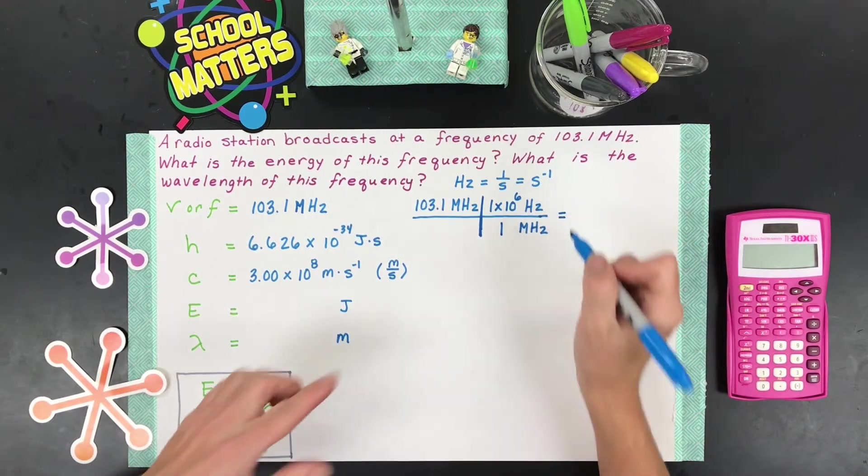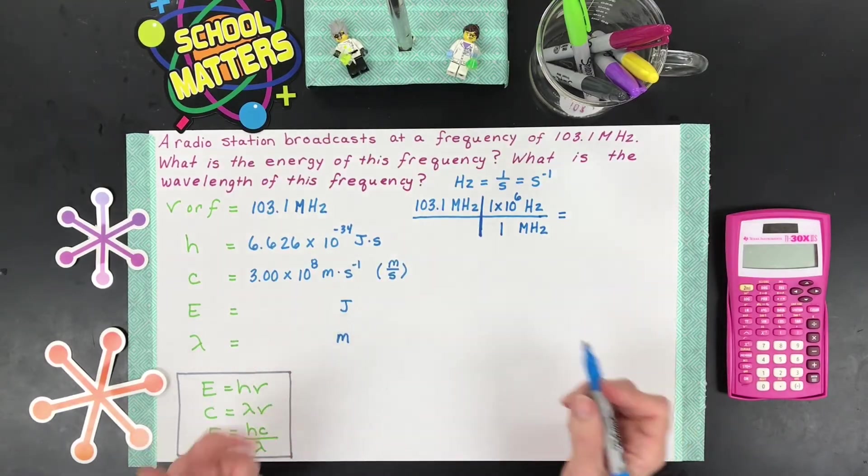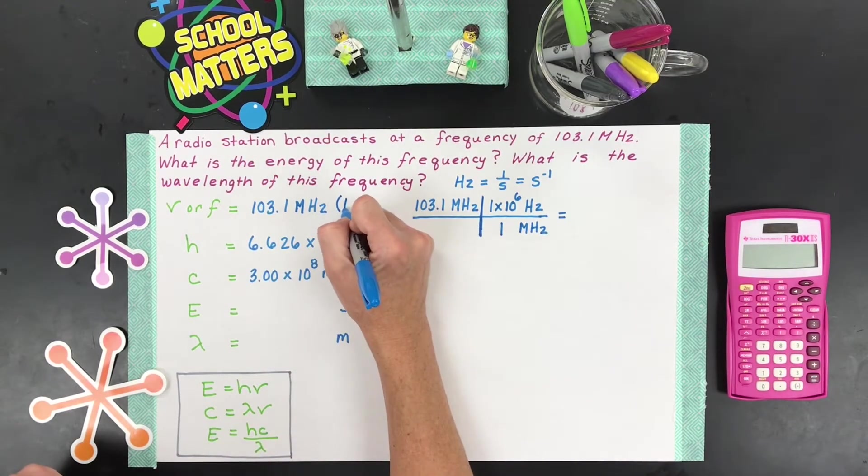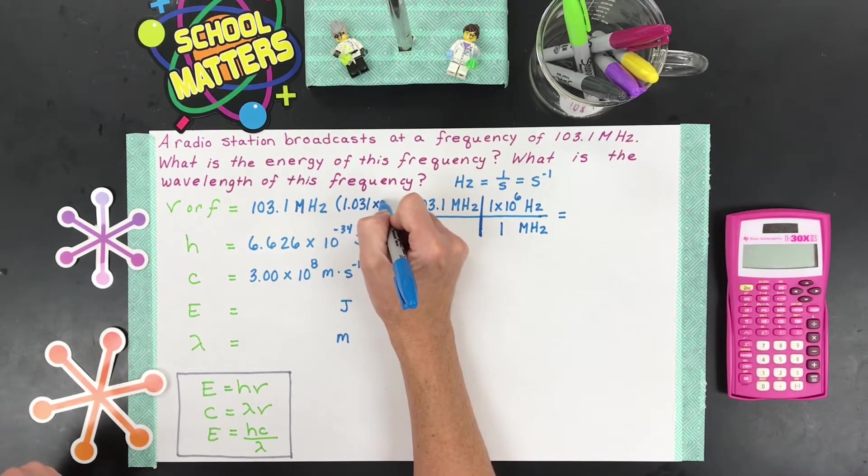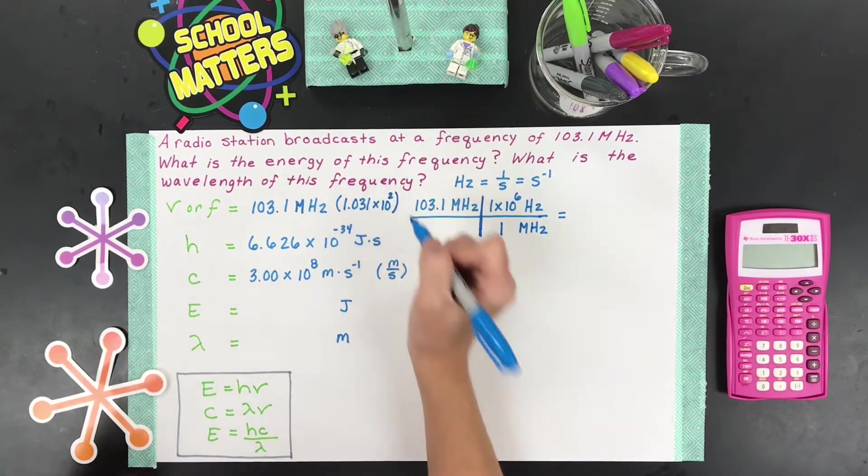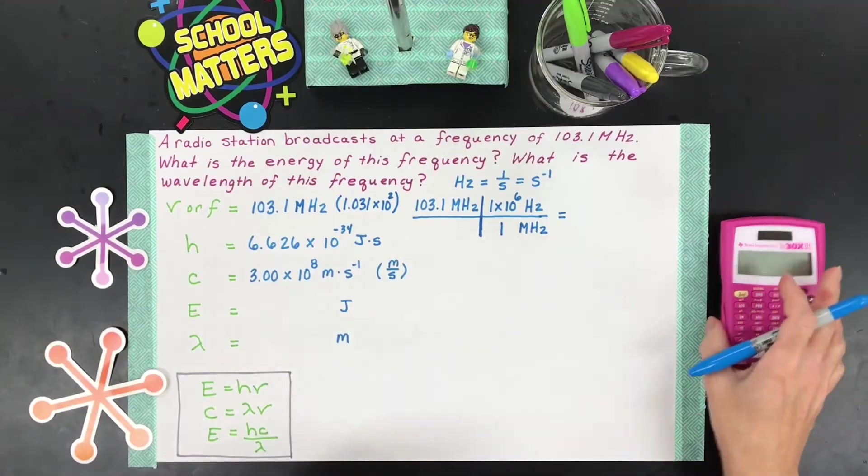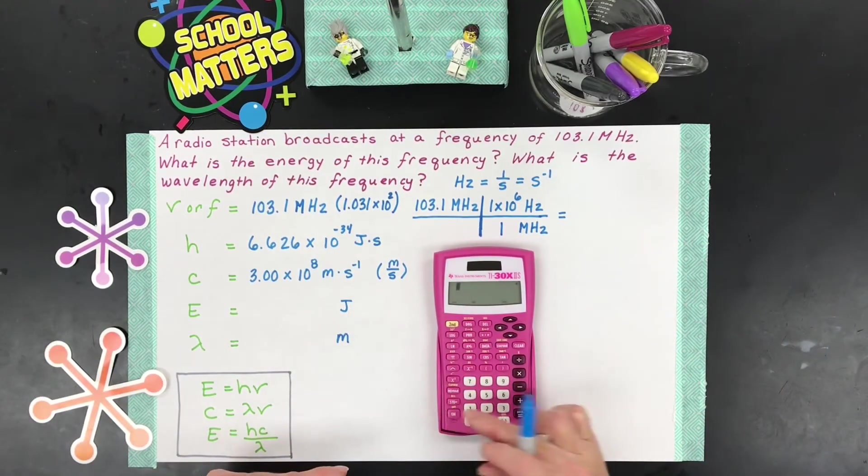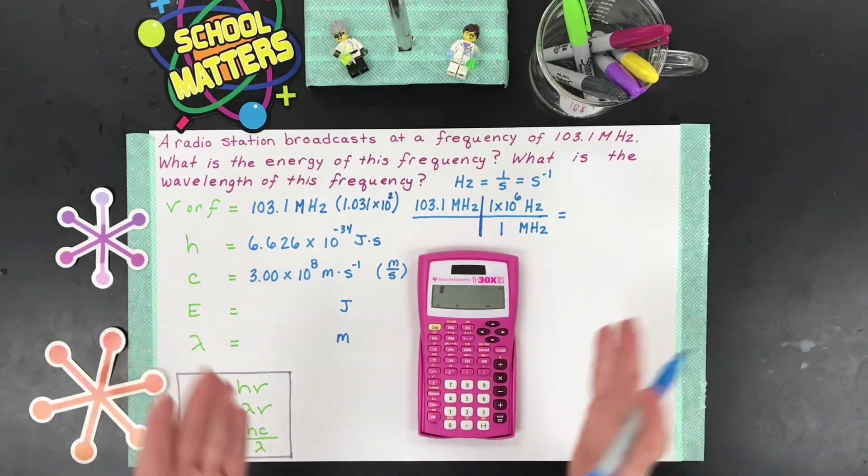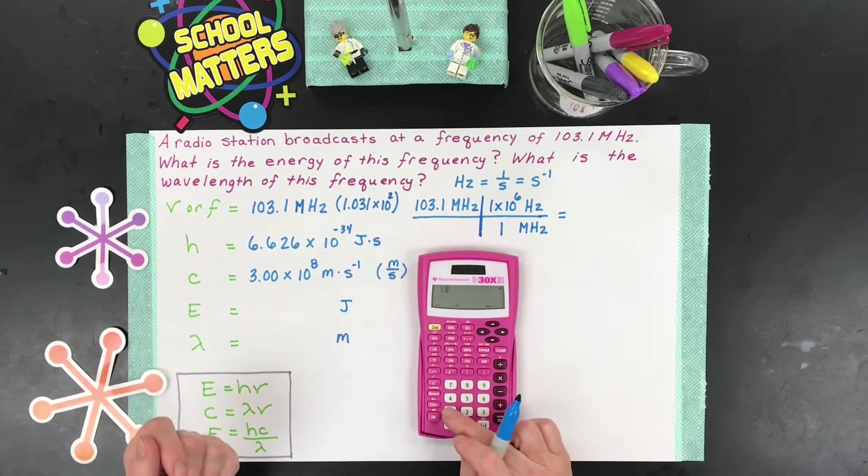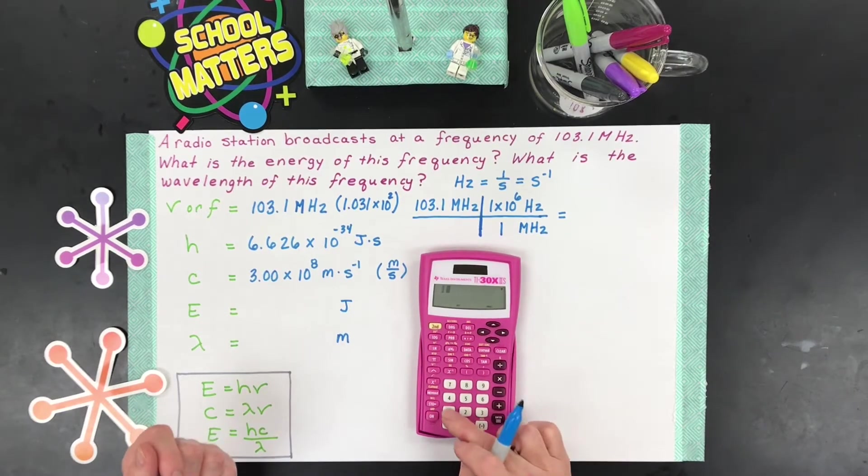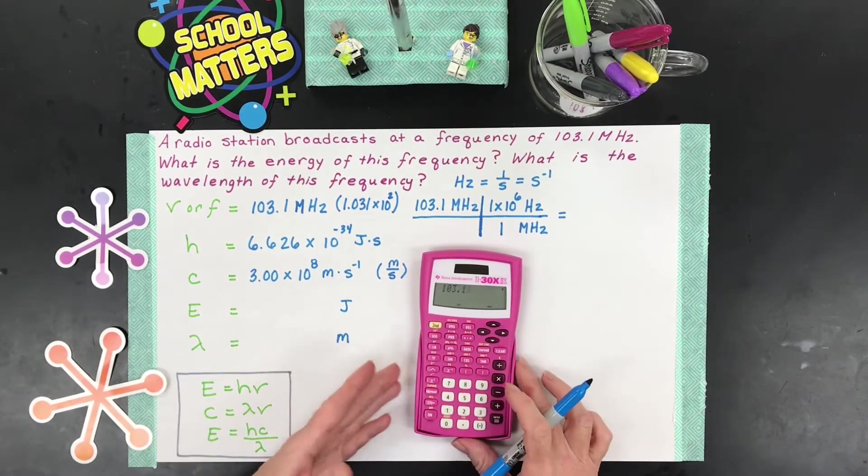So on your calculator, what we're going to do is we're going to take 103.1, or if you like scientific notation, it's actually 1.031 times 10 to the 2, same thing, and we're going to multiply it by a million. So I'm going to grab my calculator. Every video I make, I use a different calculator, depending on what one you have. This time I grabbed this one. So 103.1.